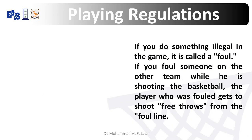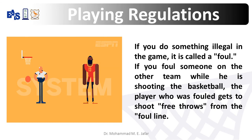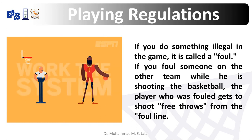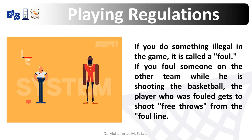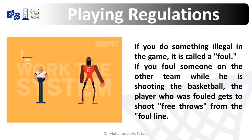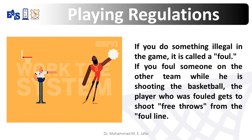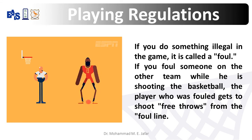If you do something illegal in the game, it is called a foul. If you foul someone on the other team while they are shooting the basketball, the player who was fouled gets to shoot free throws from the foul line. A free throw is a shot that no one is allowed to try to block.